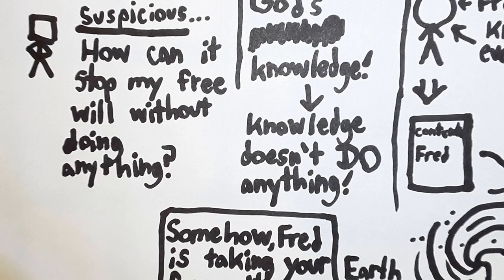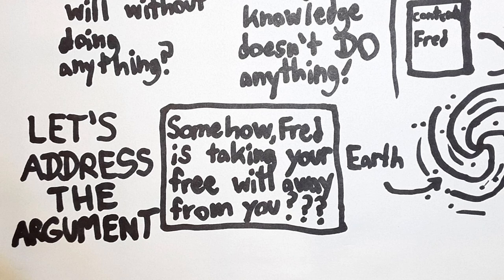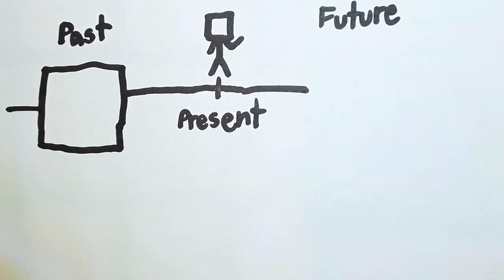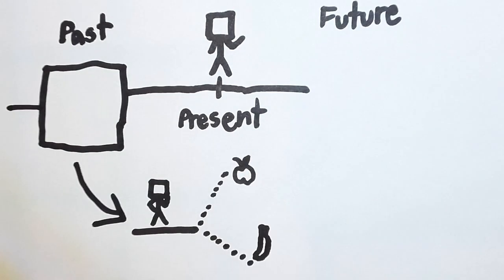But we haven't actually addressed the argument, so let's do that. Here's a timeline with the past, present, and future. Let's focus on an event that happened yesterday. I chose whether to eat an apple or a banana.